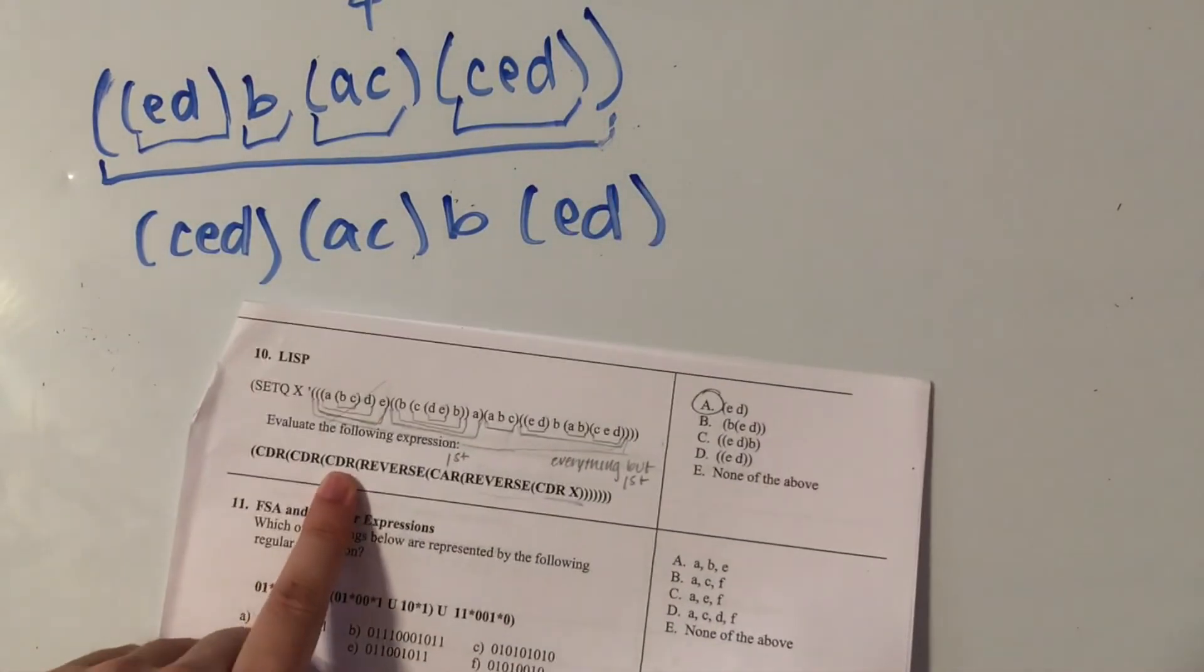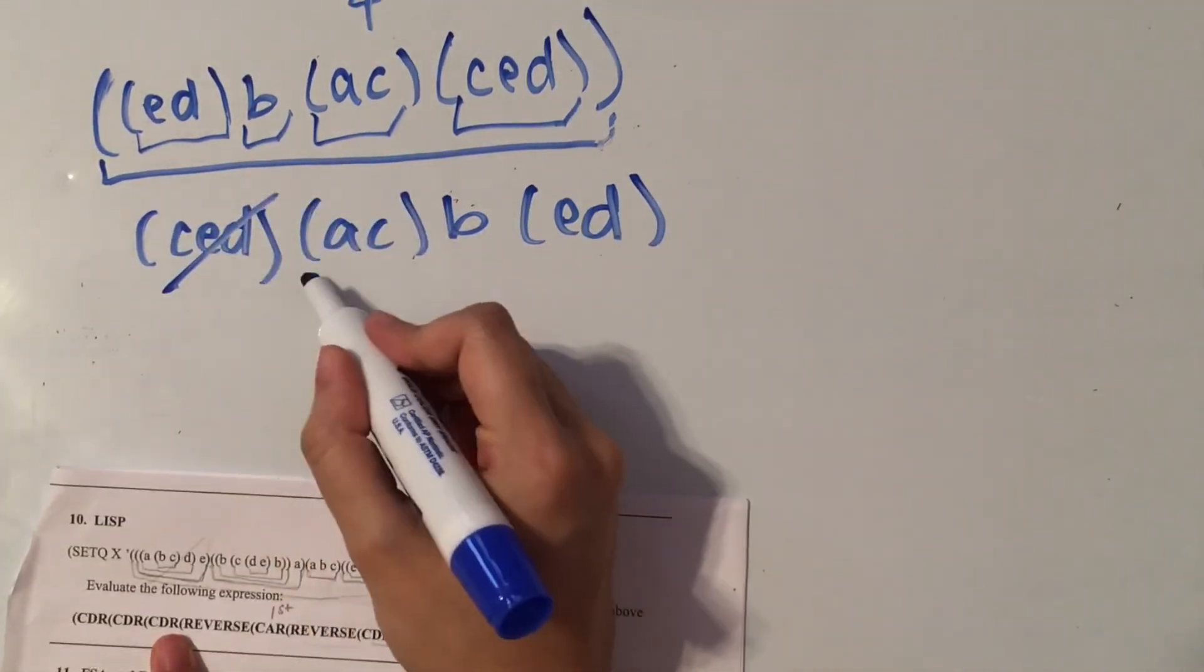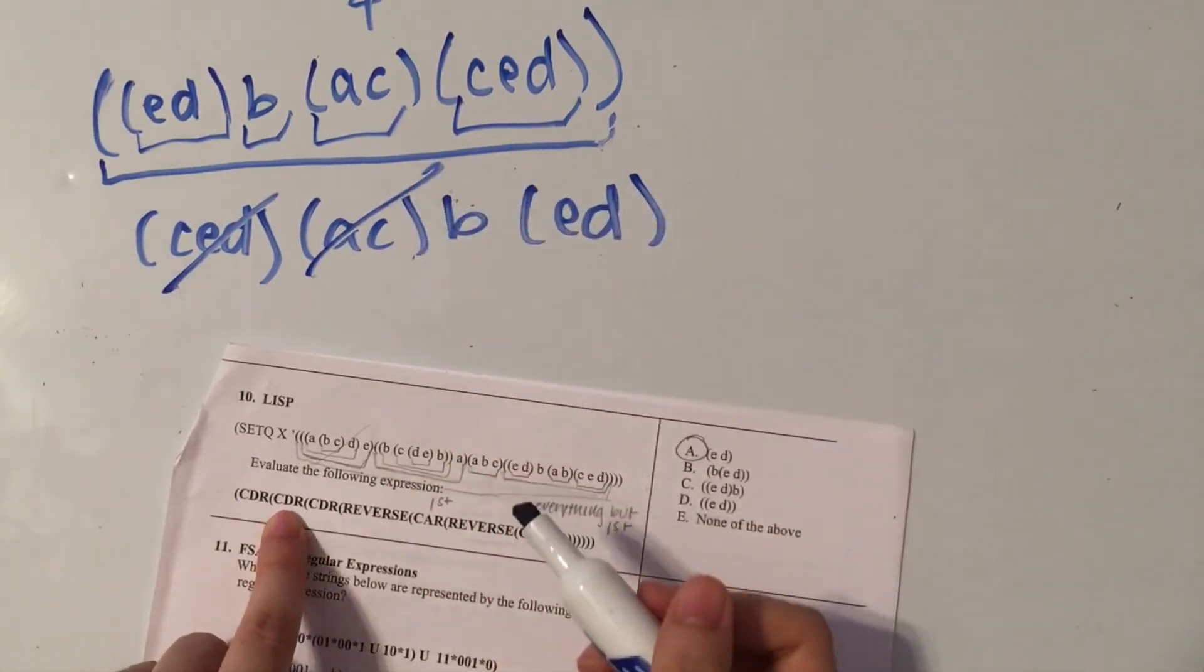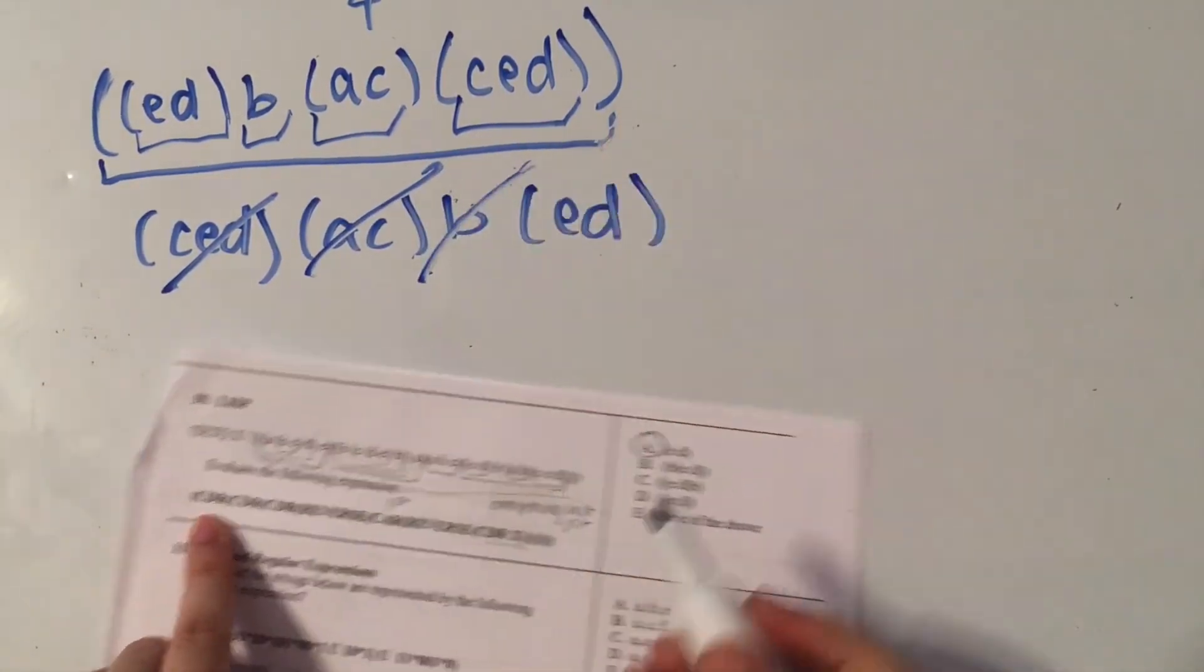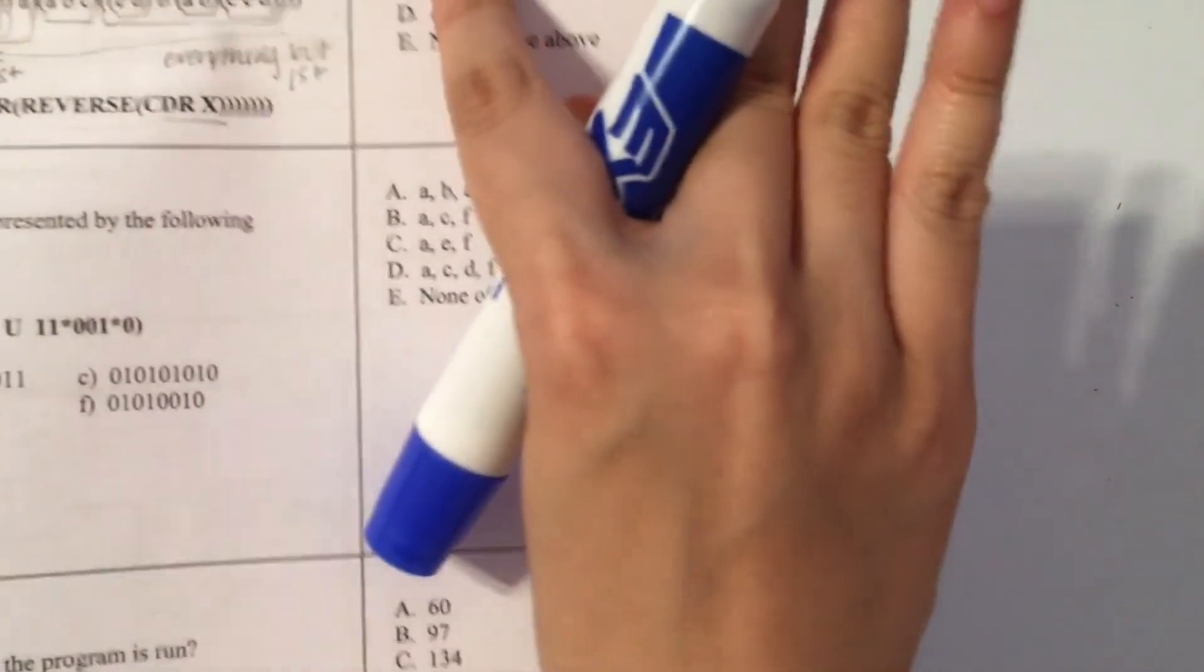Okay, so now we're on to the cutter step, which takes out the first one. So now we're left with these three. Then we cut out the first one again, and then we cut out the first one again. So we're left with E, D as a list, and that's our answer. Here.